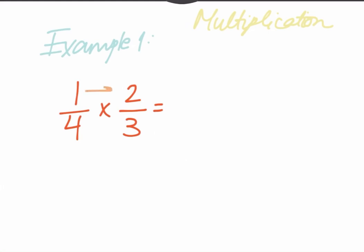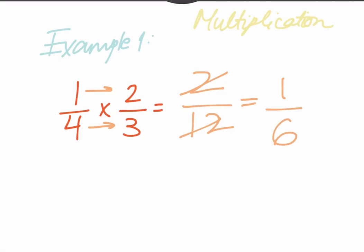First of all, you have to do the numerators — the top part — it just goes straight forward. 1 multiplied by 2 is 2, then the denominator: 4 multiplied by 3 is 12. Then you have to simplify if it's possible. Half of 2 is 1, and half of 12 is 6, so the answer will be 1 sixth.